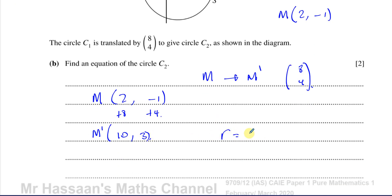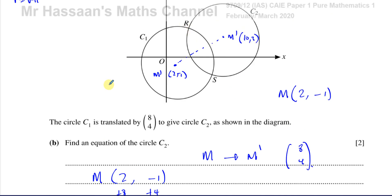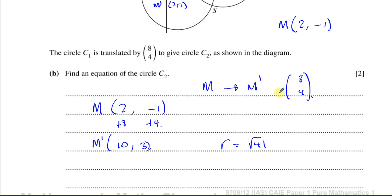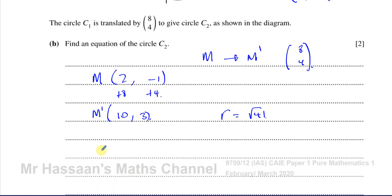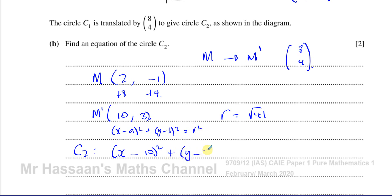Therefore, the equation for C2 is x minus 10 squared plus y minus 3 squared equals 41. Using x minus a squared plus y minus b squared equals r squared, with a equals 10, b equals 3, and r squared equals 41. That answers part B of the question.